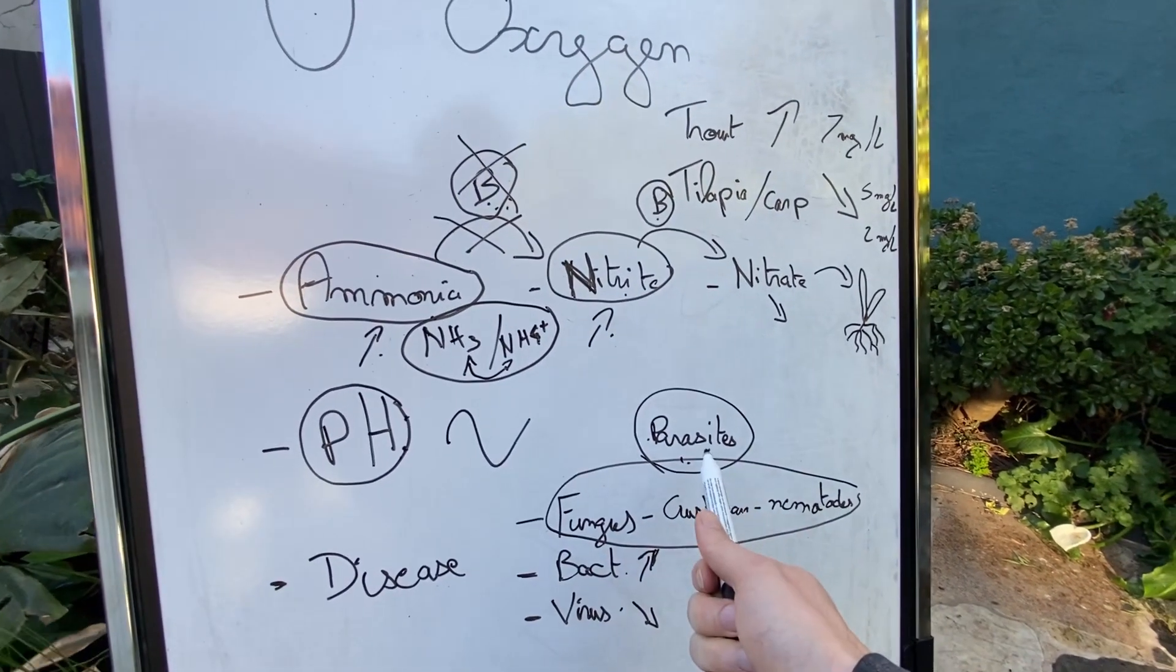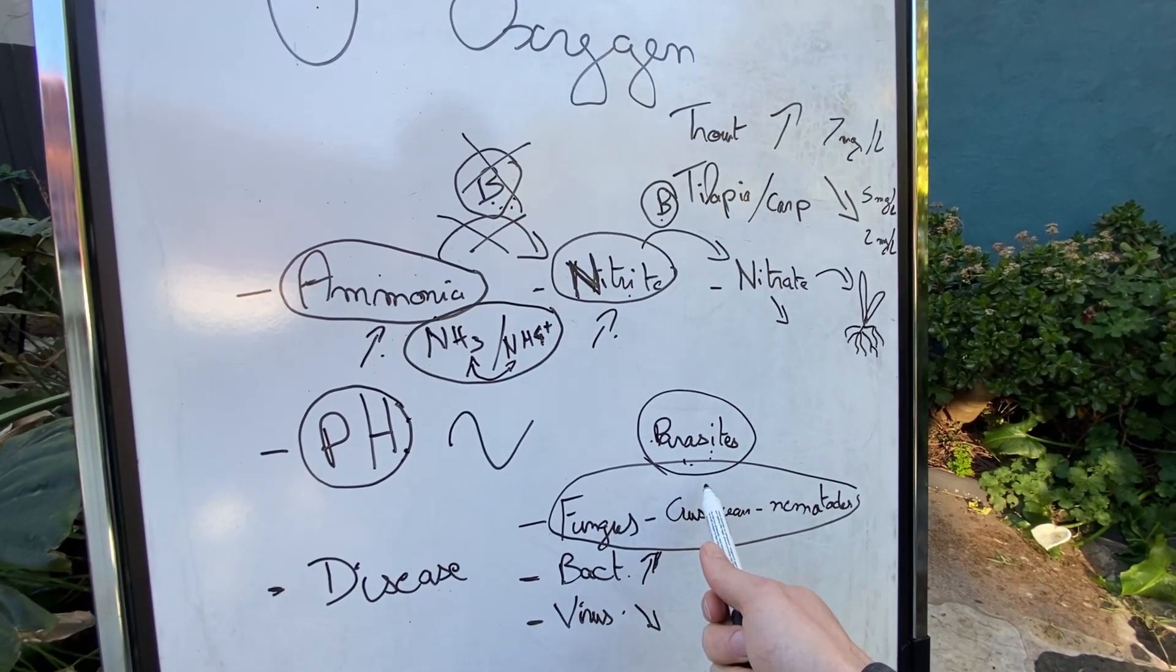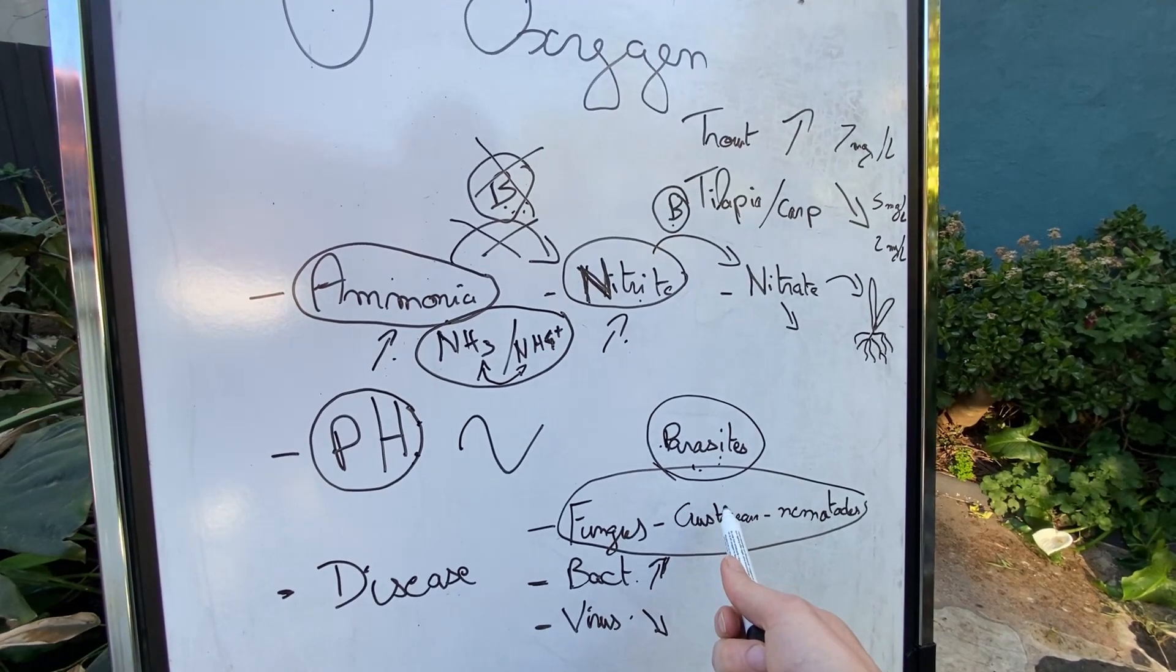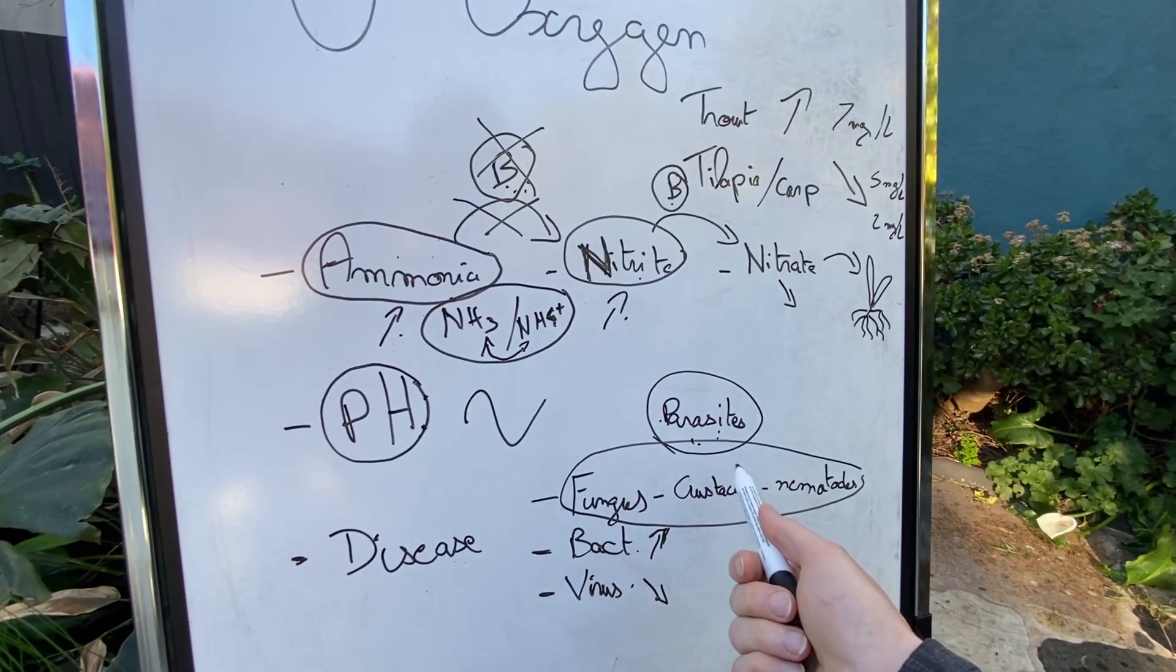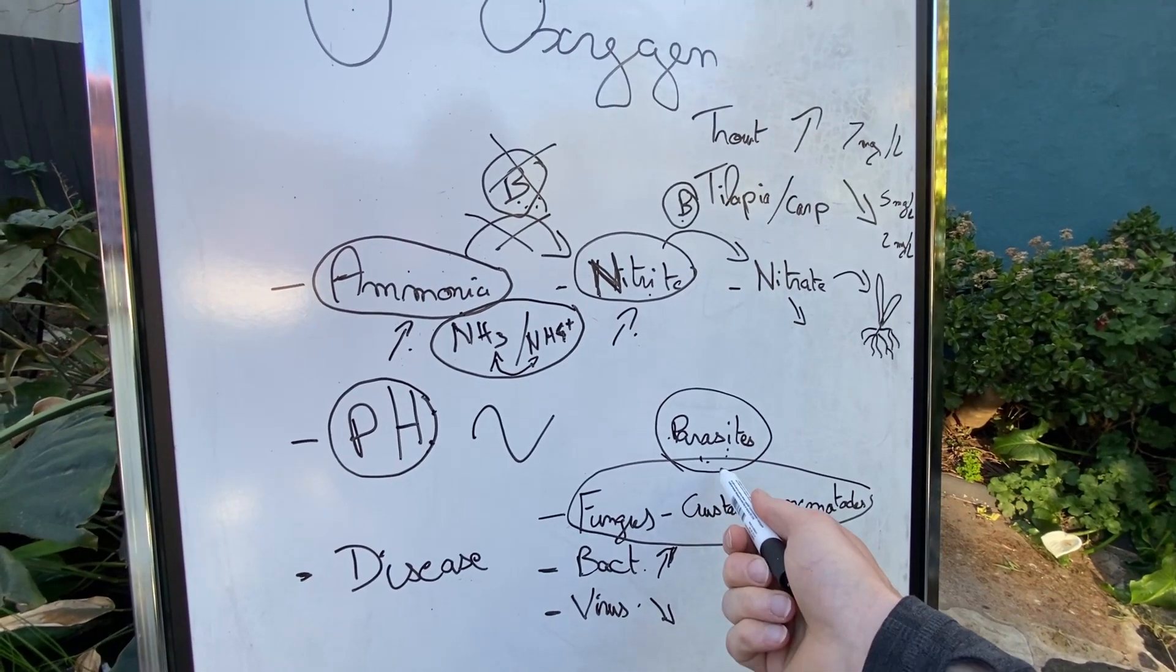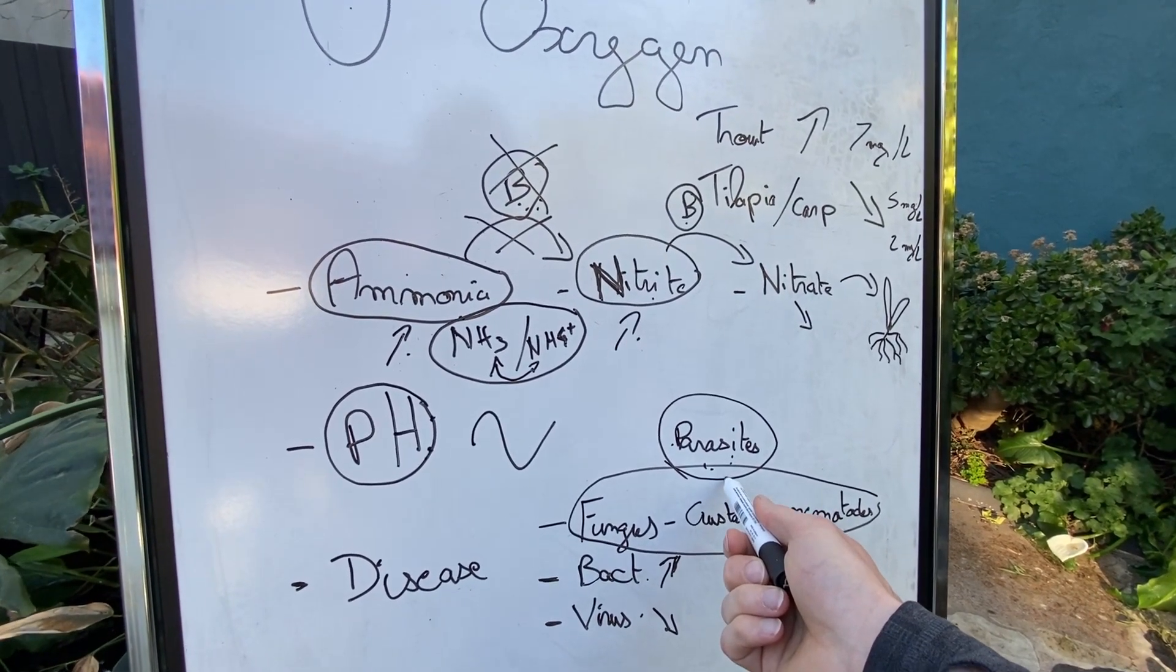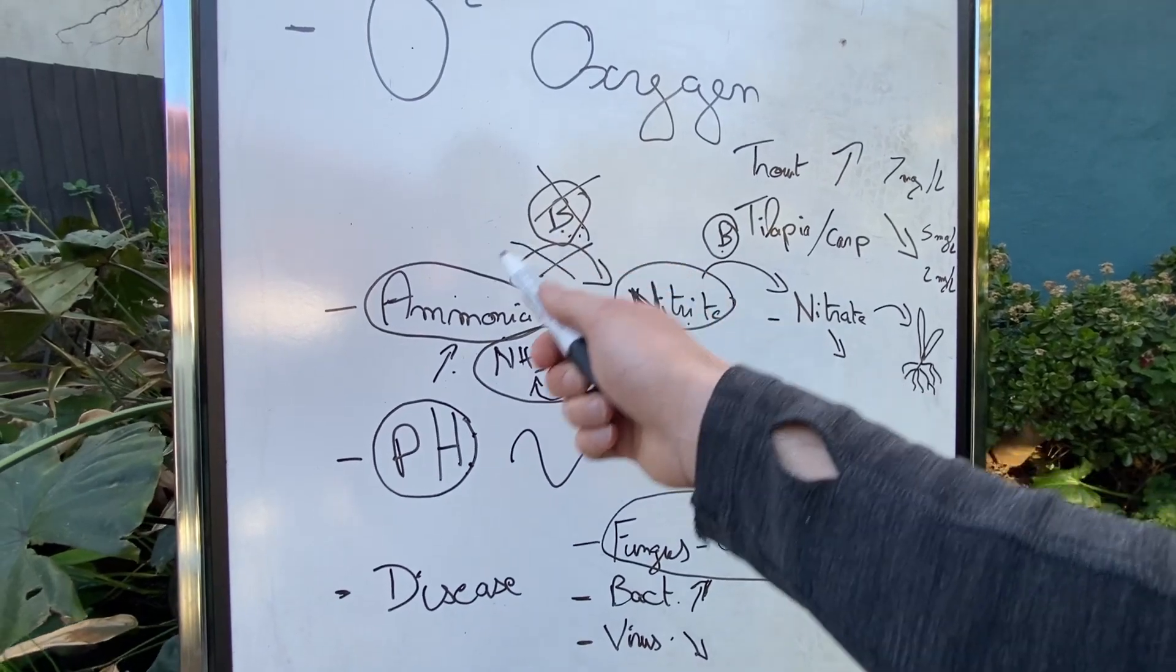So if you see parasites, don't think, okay, I'm going to buy something from the shop that you find in aquarium shop or from anywhere, basically. Don't try to put any pesticide into your water, otherwise you will have this problem and you will lose your fish.